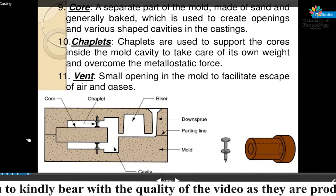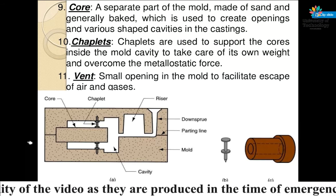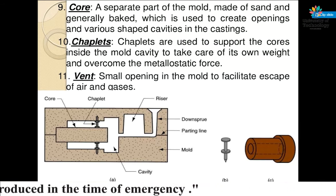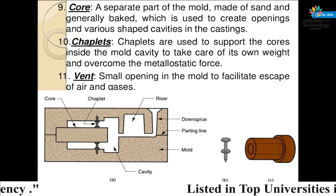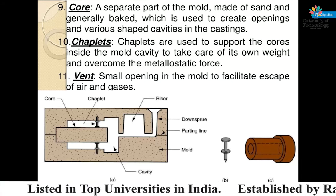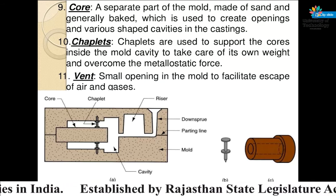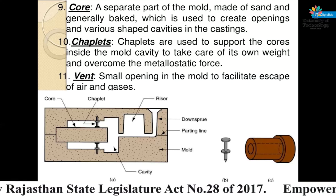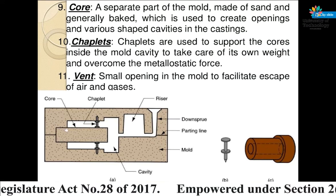Core — a separate part of the mold made of sand and generally baked, which is used to create openings and various shaped cavities in the casting. That is known as the core. We can see it in this figure.